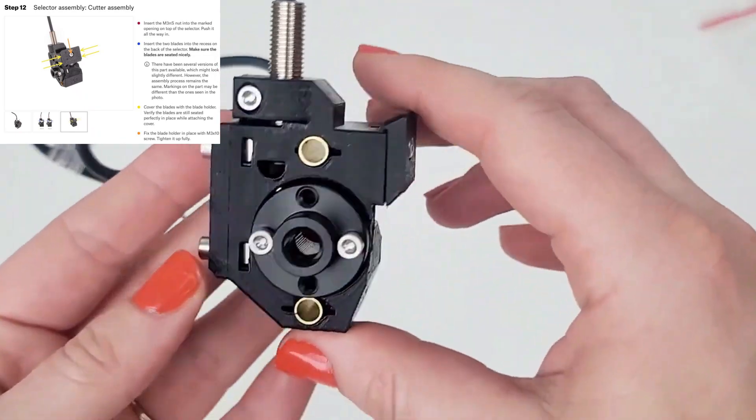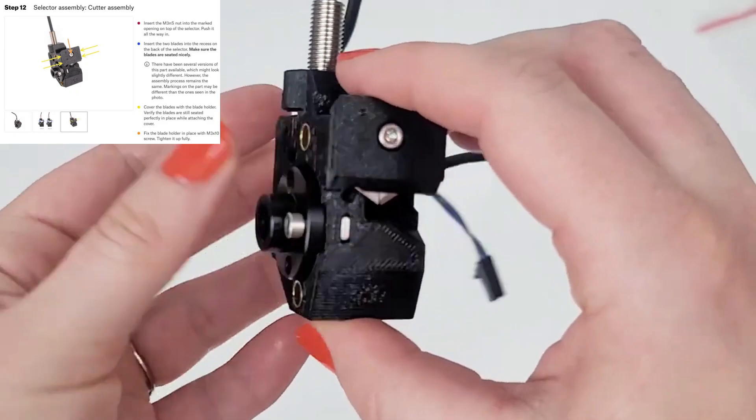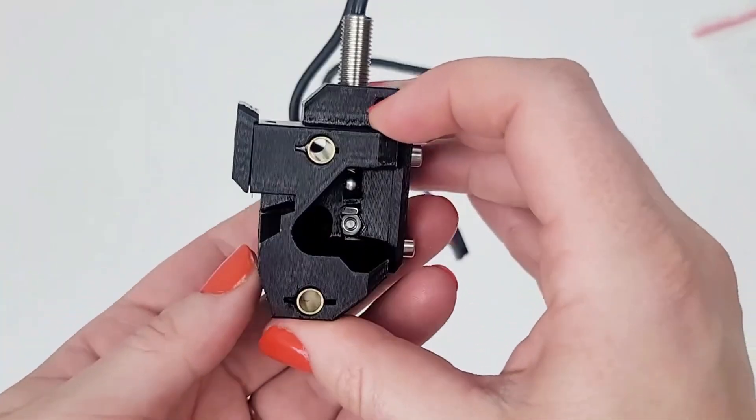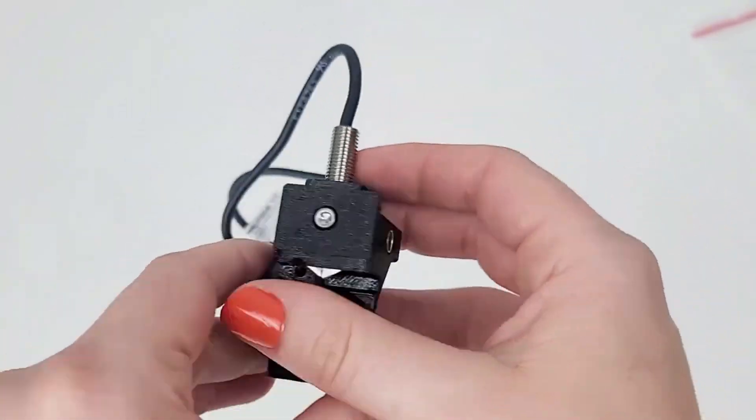That's it on this chapter. This little guy is done. The next chapter is chapter 6, the pulley body assembly. Thanks for watching.